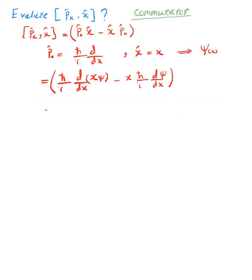We simplify things here with the common factor h bar over i. Now, what's the derivative of the product function here? We have x multiplied by d psi over dx, and this is plus psi times dx over dx.